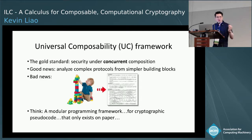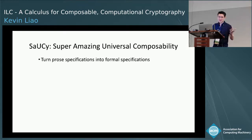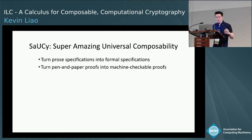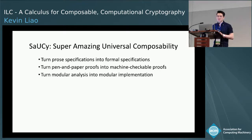You can think of UC as a modular programming framework for cryptographic pseudocode that only exists on paper, and we want to change that. In the Saucy project, we're looking to formalize and mechanize the UC framework — turning prose specifications into formal ones, pen-and-paper proofs into machine-checkable proofs, and the modular analysis UC gives you into modular implementation of secure systems as well.